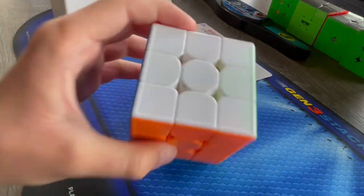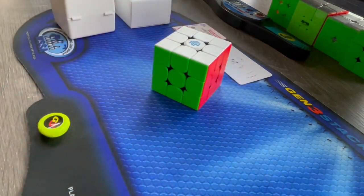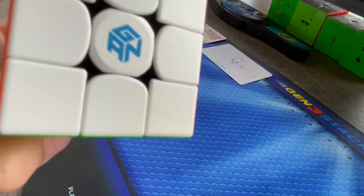My current main is the Moyu Whelong GTS 3M. It weighs like 92 grams and is way heavier than the GAN 11M Pro, which is literally only 64 grams.